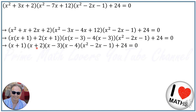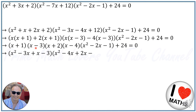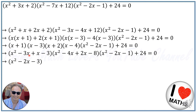Now I swap these two middle factors — I want to expand (x+1)(x-3) together and (x+2)(x-4) together. So (x+1)(x-3) gives x²-3x+x-3 = x²-2x-3, and (x+2)(x-4) gives x²-4x+2x-8 = x²-2x-8. The rest stays the same, so our expression becomes (x²-2x-3)(x²-2x-8)(x²-2x-1).